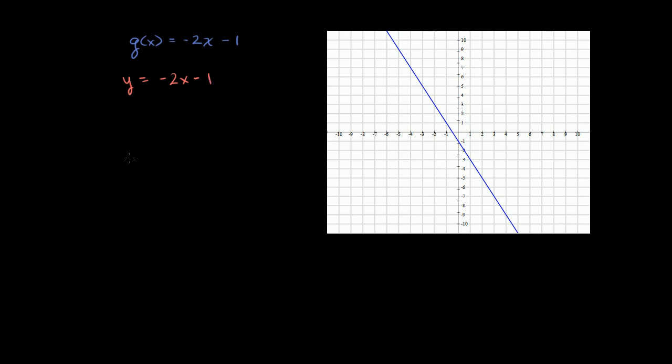Now we just solve for x. y plus 1 is equal to negative 2x. Just added 1 to both sides. Now we can divide both sides of this equation by negative 2. And so you get negative y over 2 minus 1 half is equal to x.